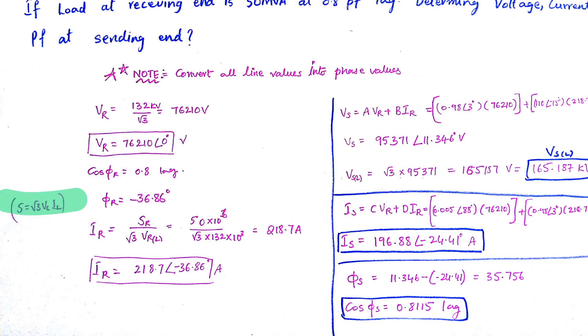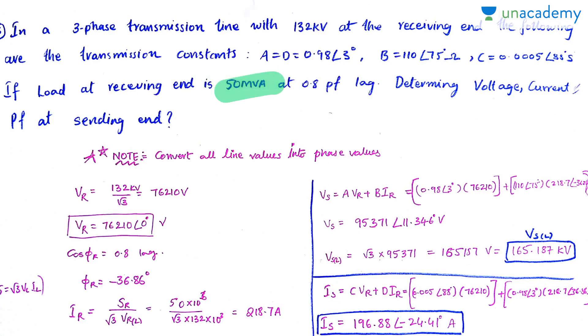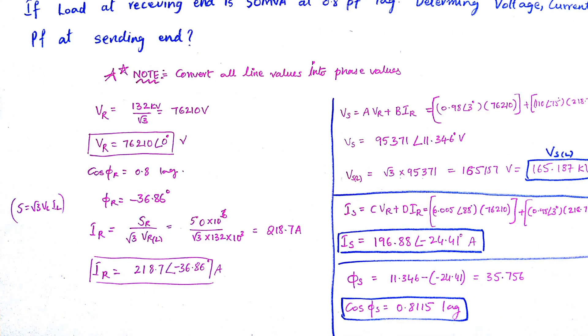I want to find the receiving end current. Receiving end current can be found by this relation: S equals root 3 times VL times IL. The receiving end apparent power is given - 50 MVA. So Ir will be Sr by (root 3 times Vr). You are just going to do with line values. The reason is Ir also you will be getting as line value. But Ir line equals Ir phase, because although not specifically mentioned, we will assume the entire system is connected in star. And you know in star, line voltage equals root 3 times phase voltage, but line current equals phase current. So there is no problem there. You proceed with this and get the current: 218.7 Amps.